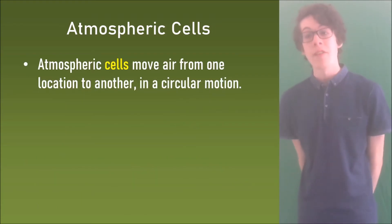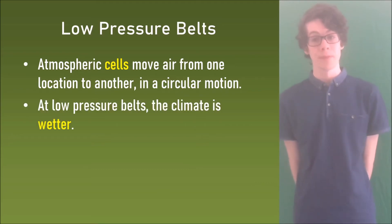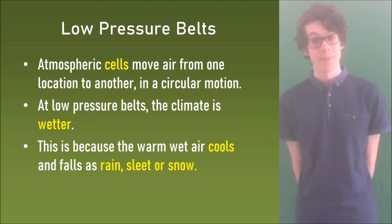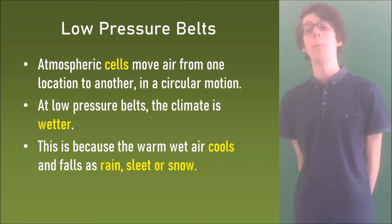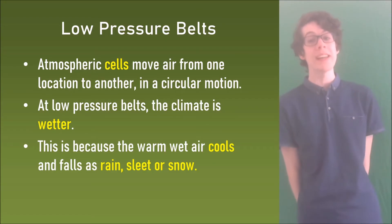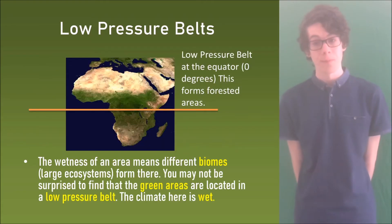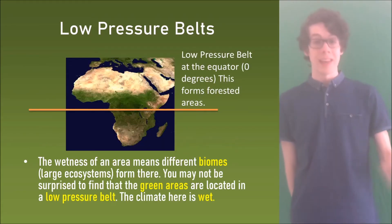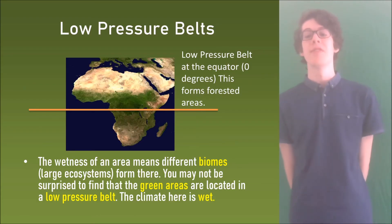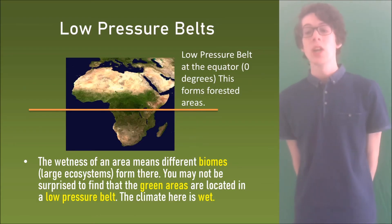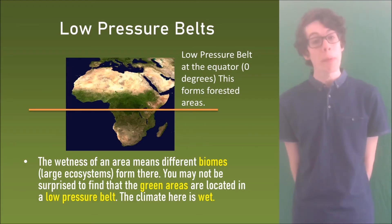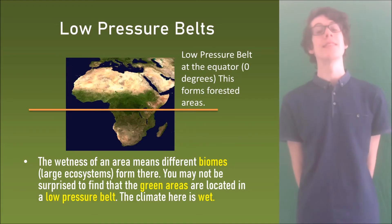Atmospheric cells move air from one location to another in a circular motion, and at low pressure belts the climate is wetter. This is because the warm wet air cools and falls as rain, sleet, or snow. Looking back at the map of Africa, you can see that the wetness of an area means different biomes form again. You may not be surprised to find that the green areas are located on a low pressure belt — the climate is wet.